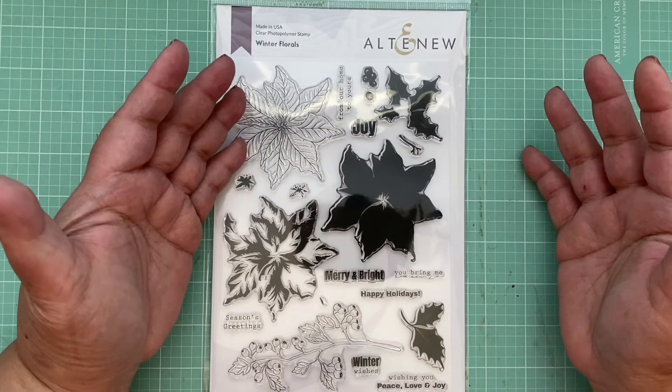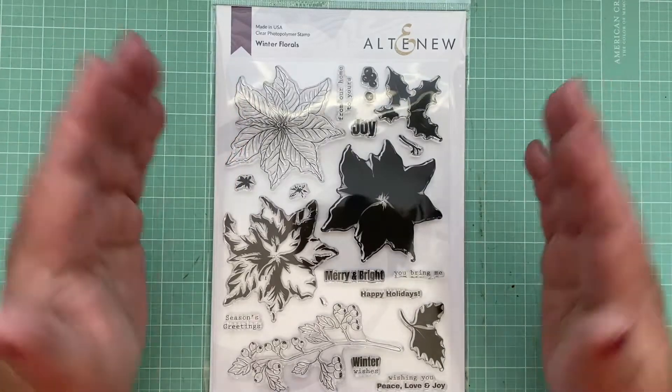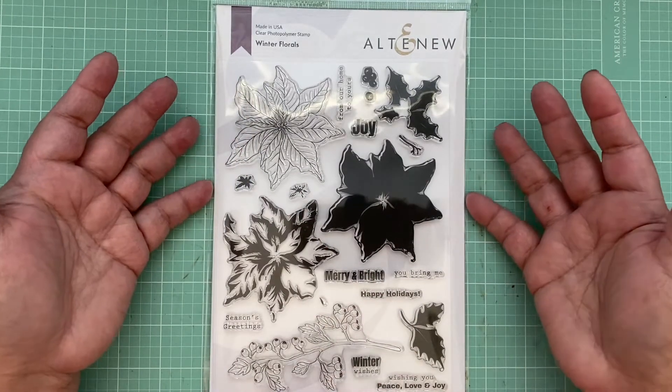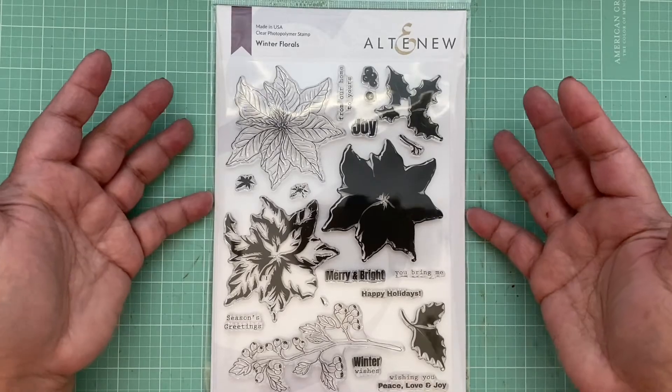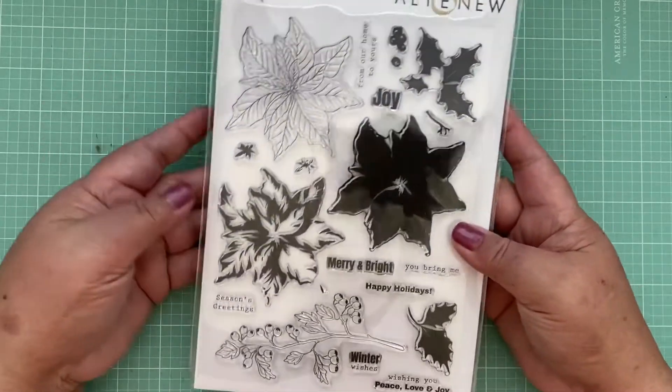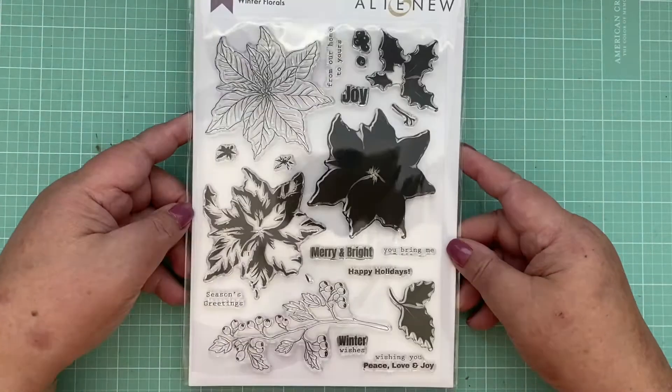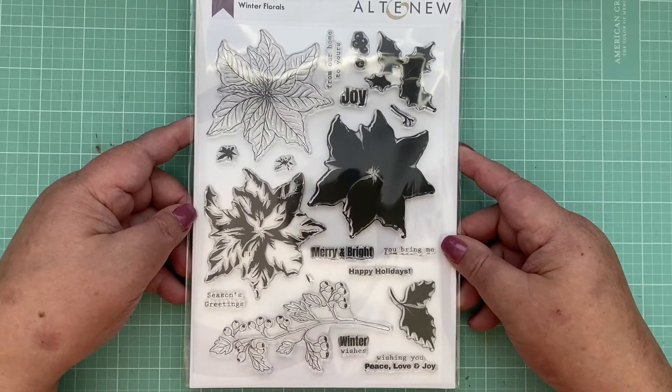Welcome to my scrappiness guys, this is Marissa and we are going to be working on a card today. This is a stamp set from Altenew, the winter floral. I am going to create a card using this stamp set.